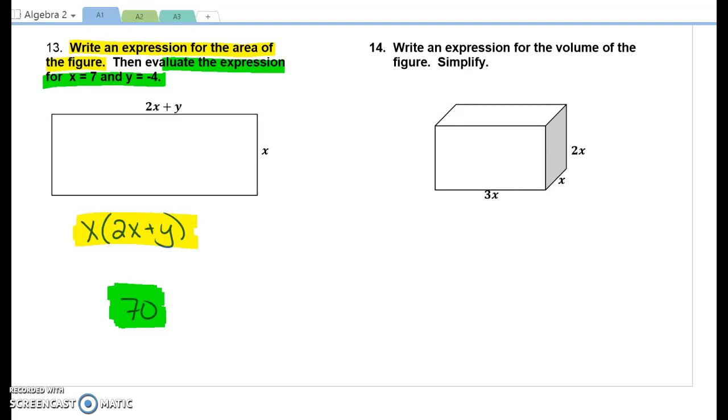Number 14 says write an expression and simplify. Volume is length times width times height. So we have our length times our width times our height. With multiplication, the order that you multiply things doesn't matter. So what's happening between the 3 and the x? They multiply, so this is really 3 times 2 times x times x times x. The order that we write those things doesn't matter. 3 times 2 is 6. What is x times x times x? x cubed.